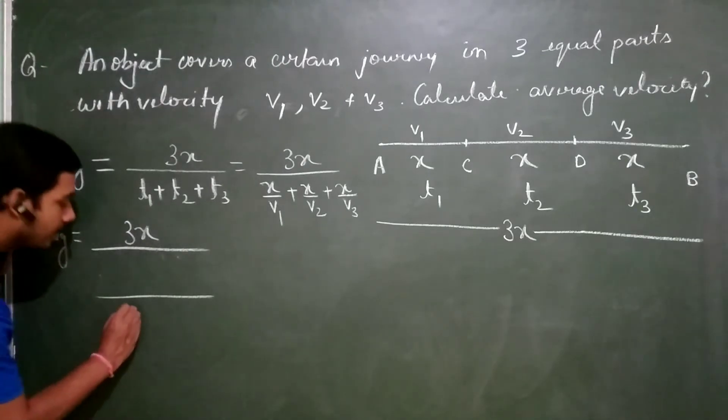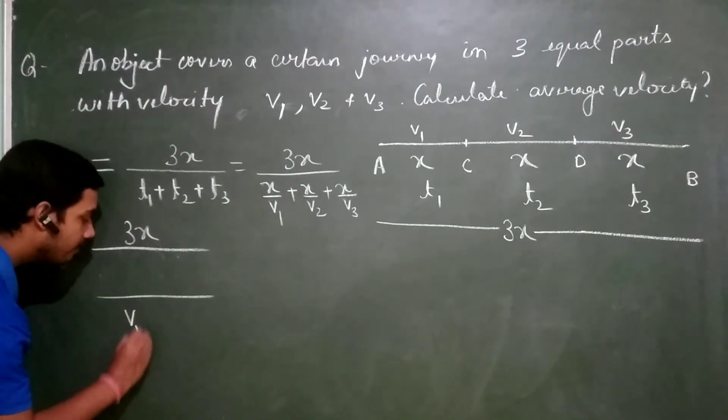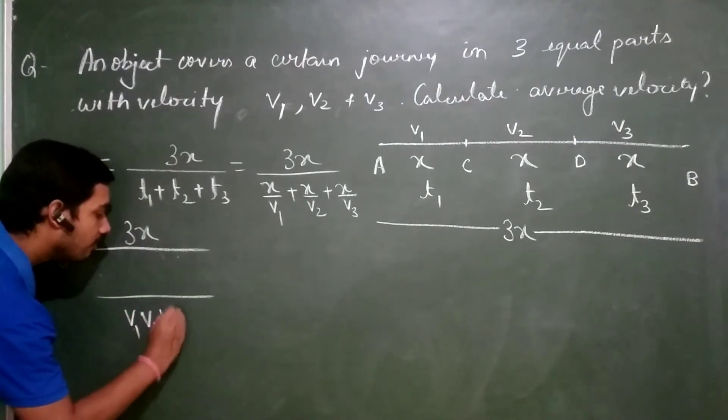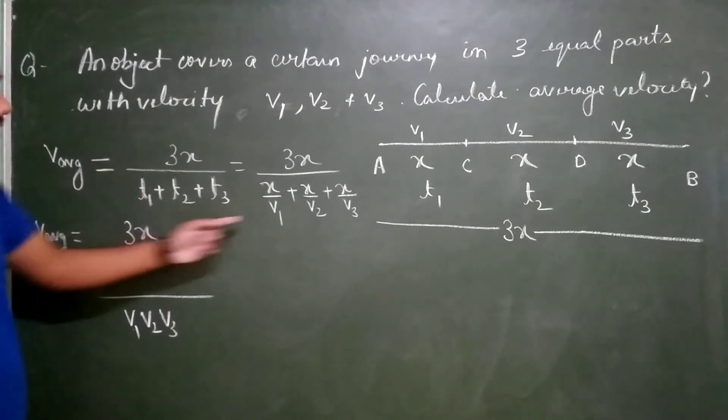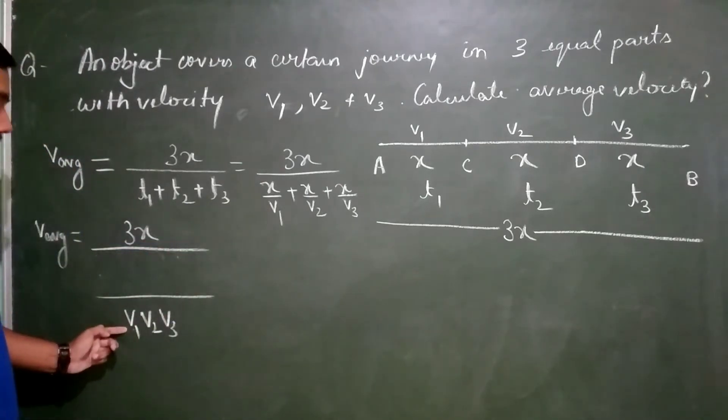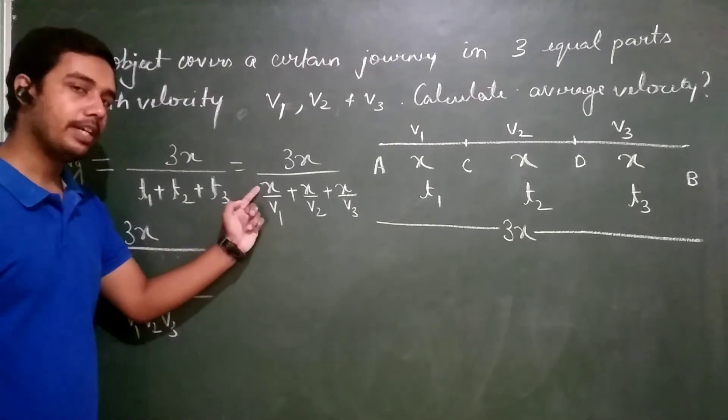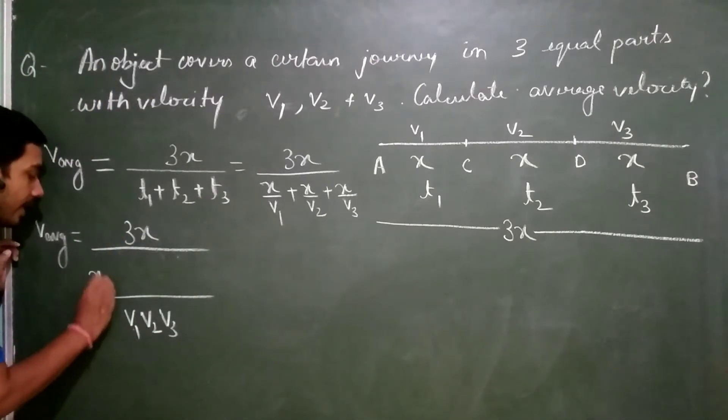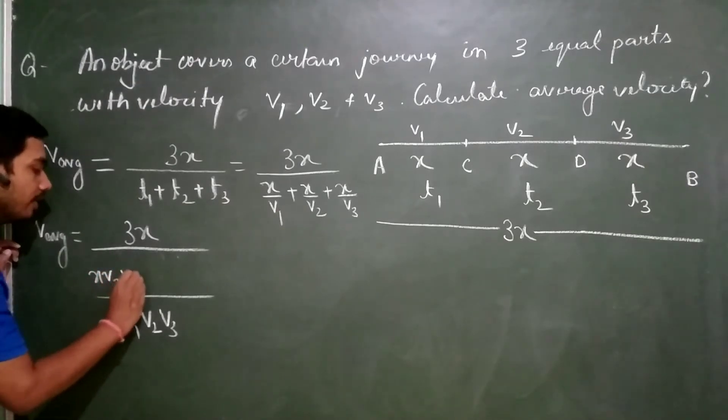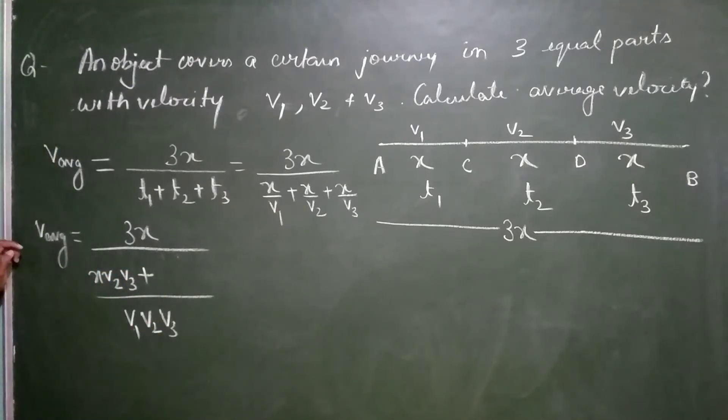That is the LCM. LCM will be V1, V2, V3. V1 and V1 will cancel. What is left? V2, V3. This V2, V3 will get multiplied to x. So x V2 V3. Now, I am writing directly again.